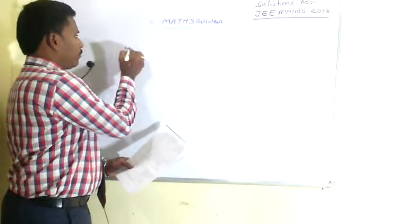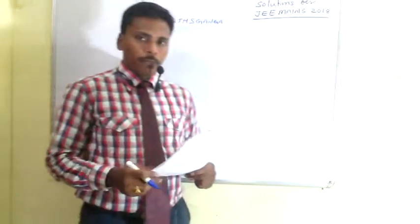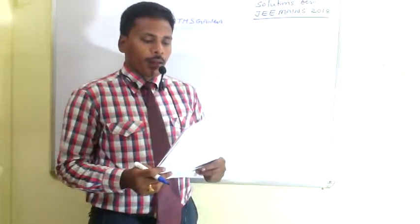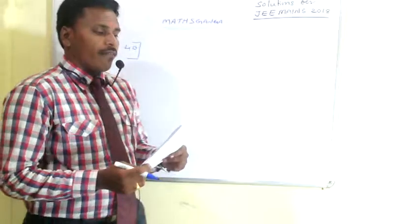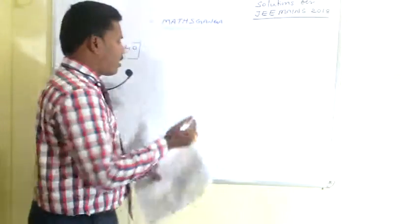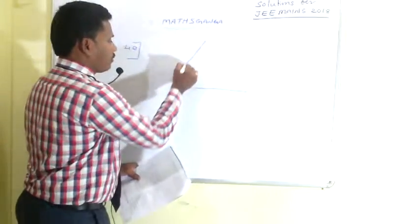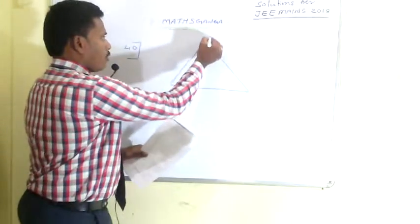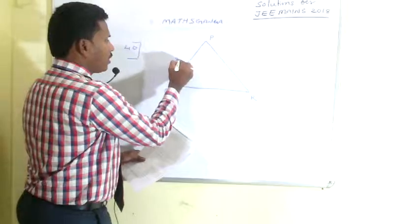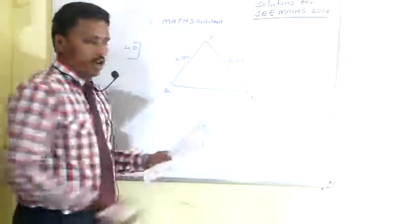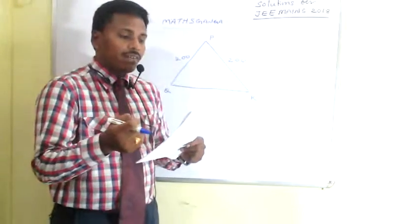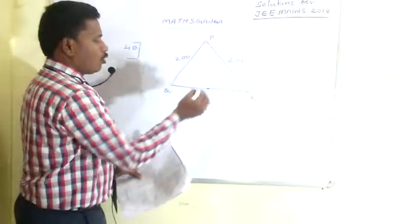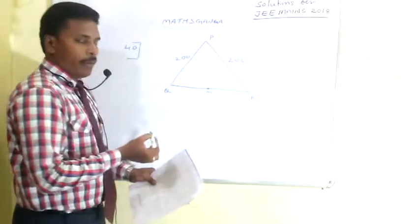The first is question 40, from the topic heights and distances — applications of trigonometry. The question states: PQR is a triangular park with PQ equals PR equals 200 meters. A TV tower stands at the midpoint of QR. So we have this triangular park PQR where PQ and PR are each 200 meters, and the tower stands at the midpoint M of QR.